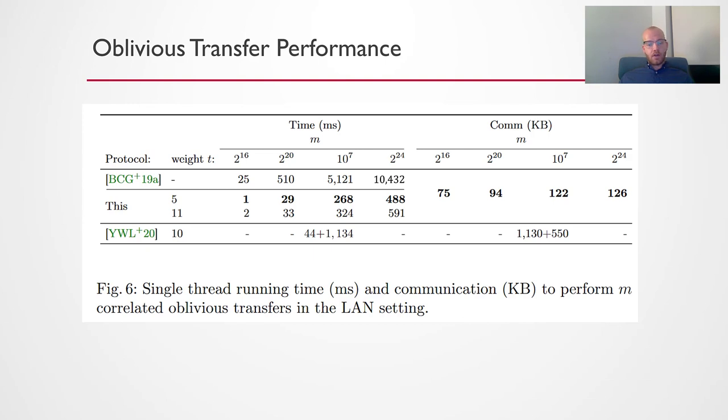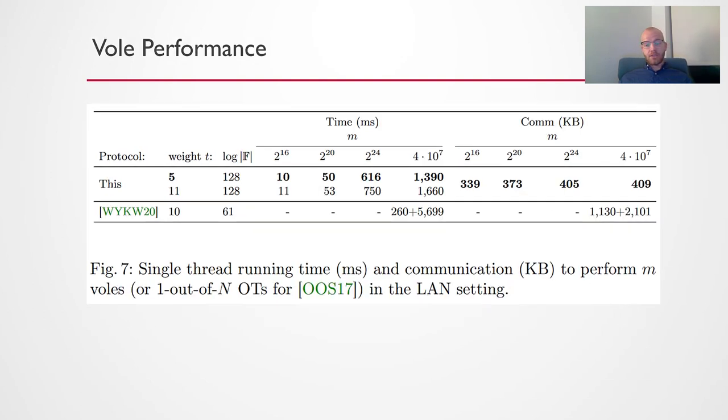Another work from 2020 uses primal LPN and a similar structure to ours and they can perform 10,000 OTs in roughly 1.2 seconds while ours takes a quarter second so a very significant improvement. What's more, ours achieves the silent property whereas theirs does not. Maybe the most surprising takeaway is that our protocol is actually faster than the original OT extension work of IKNP. This work has stood the test of time for almost 20 years and we finally are able to beat it in terms of running time and also significantly improve its communication. A similar story is true for the VOL performance in that we are roughly five times faster than another VOL work from 2020 and we also achieve this silent property.